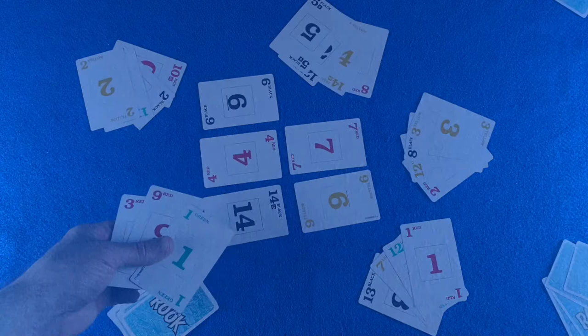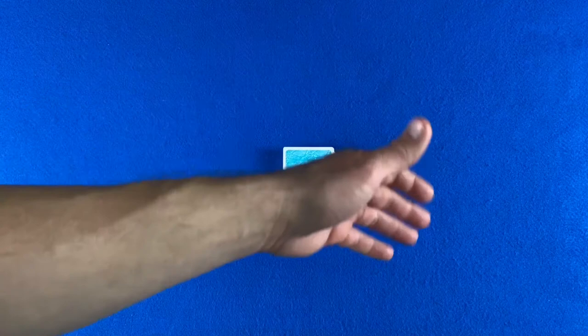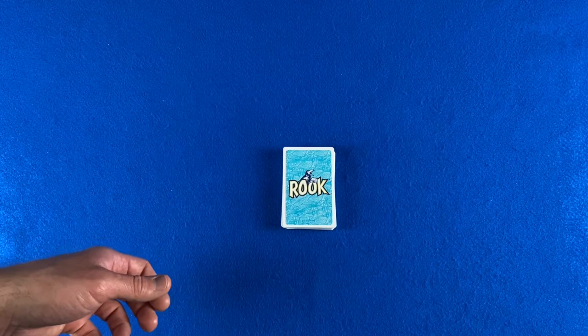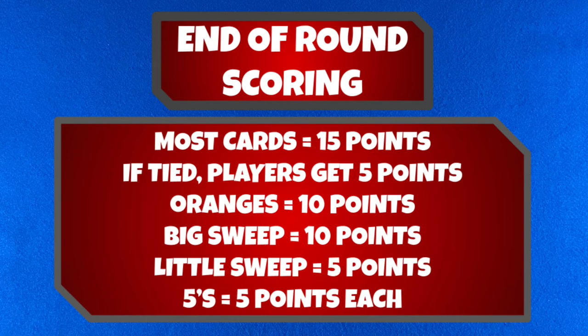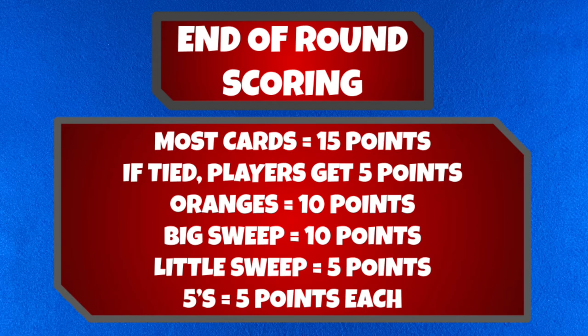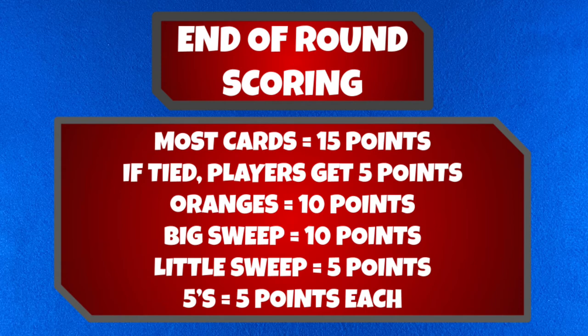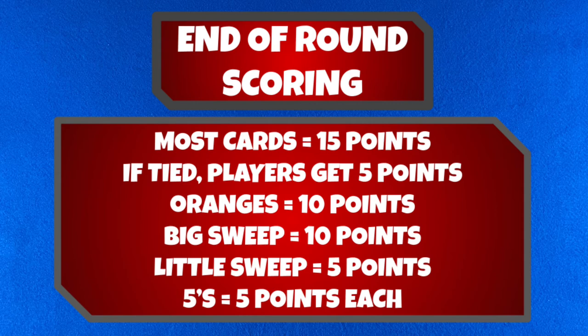Once all of the cards have been dealt, played, or captured, the round is over and it's time to tally up your score. Whoever collects the most cards earns 15 points. If there's a tie among players for who has captured the most, each player in the tie gets 5 points. Any oranges called are worth 10 points. Any big sweeps are worth 10 points. Any little sweeps are worth 5 points. And any fives captured are worth 5 points.